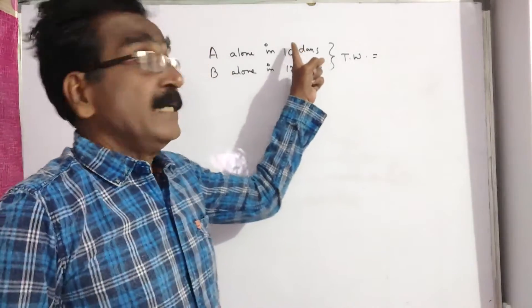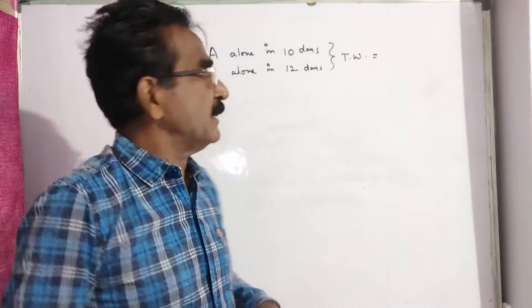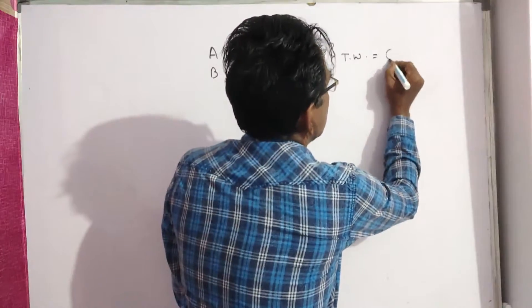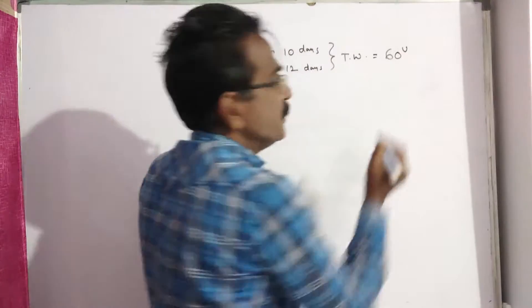Let us say the total work is the LCM of these two numbers, that is 60 units.